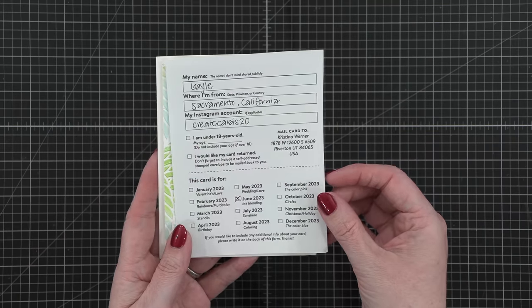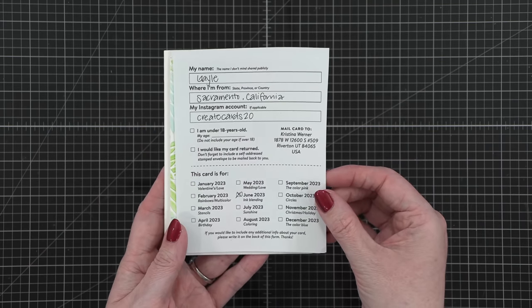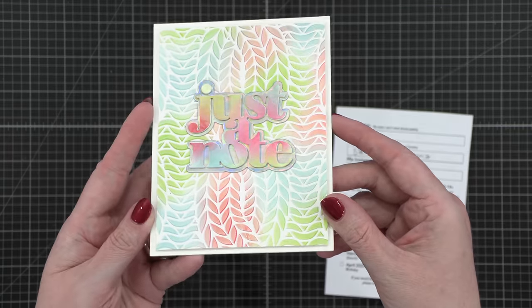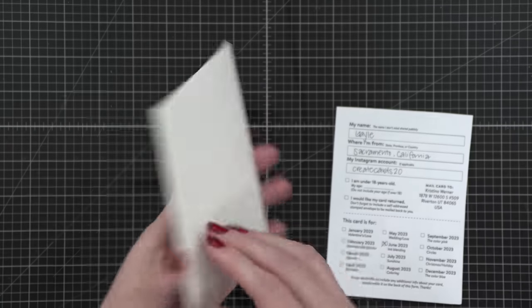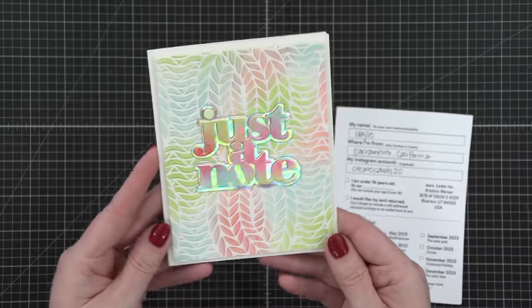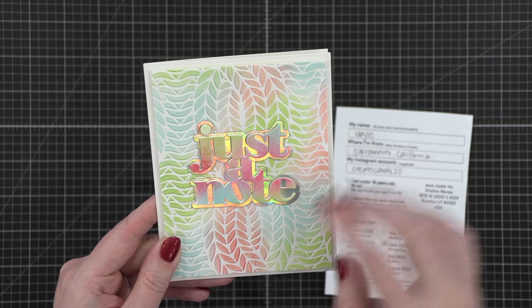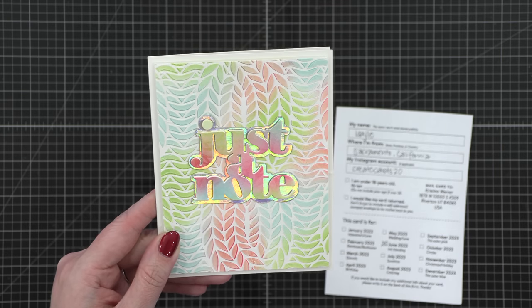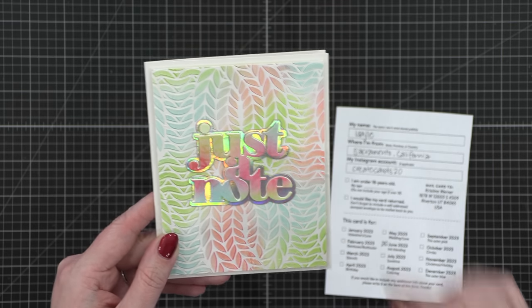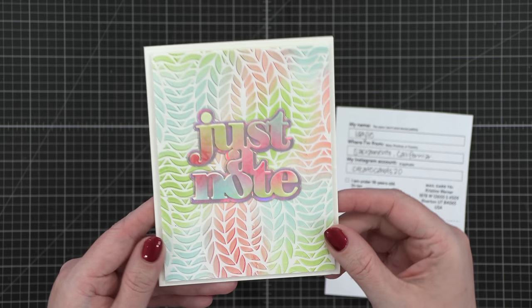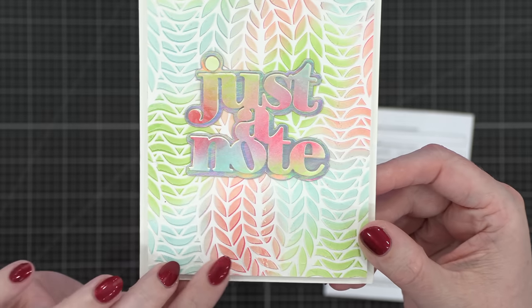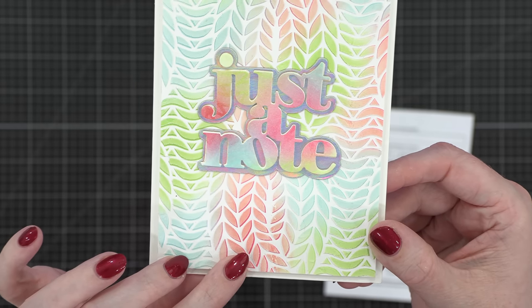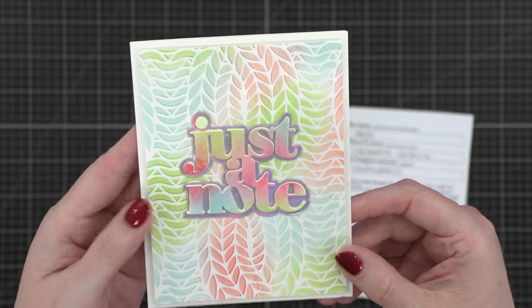This next card is from Gale in California and this is for the month of June, so it's ink blending. And look how beautiful this is. I love it so much. So it looks like she's taken a stencil and she first ink blended the colors and then with the stencil right on top, maybe a little bit offset, she went back over it with a paste. So you can kind of see some areas where the darker ink that she first ink blended are popping through.